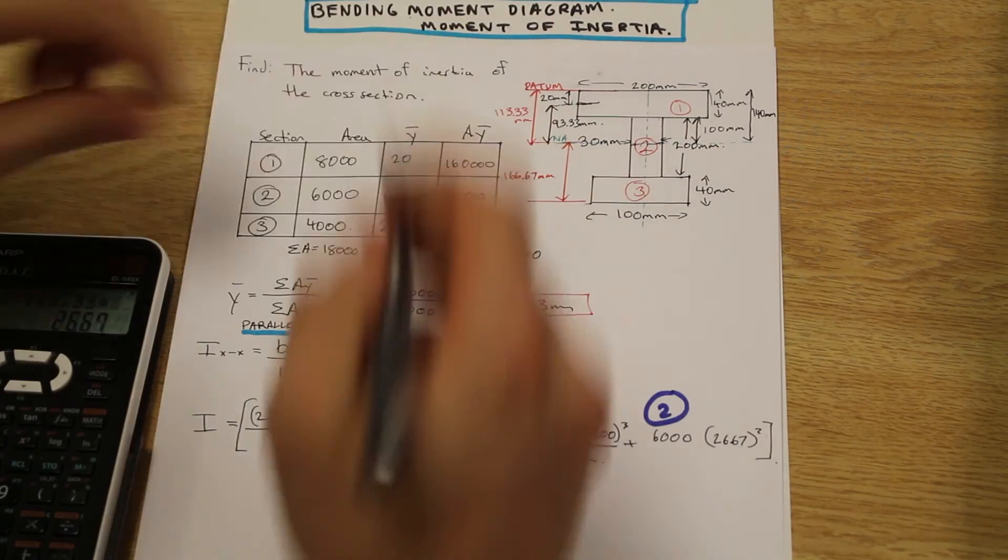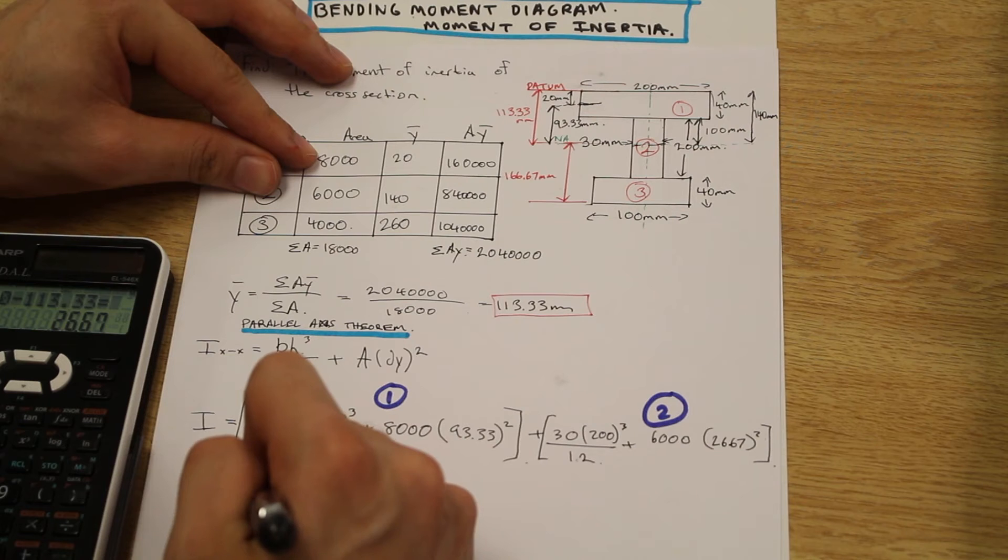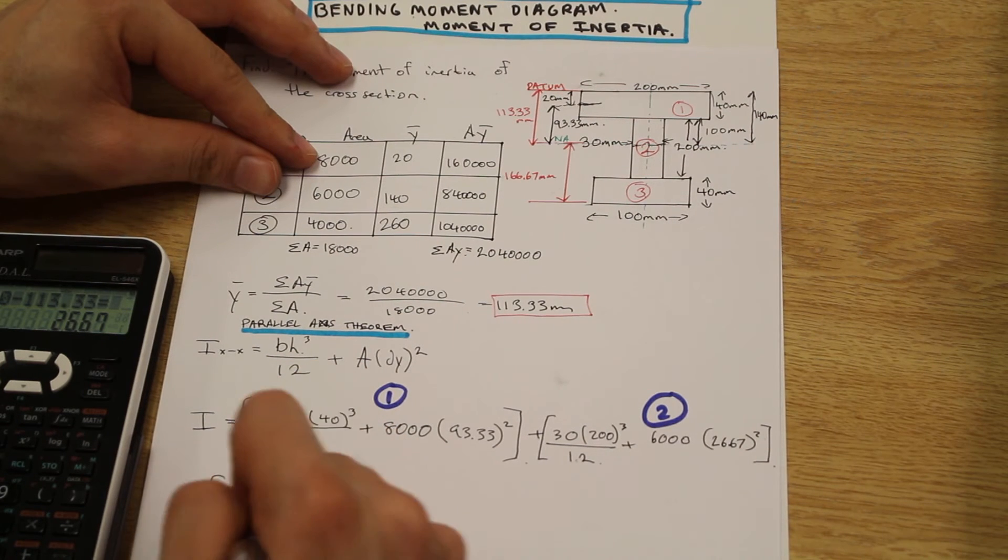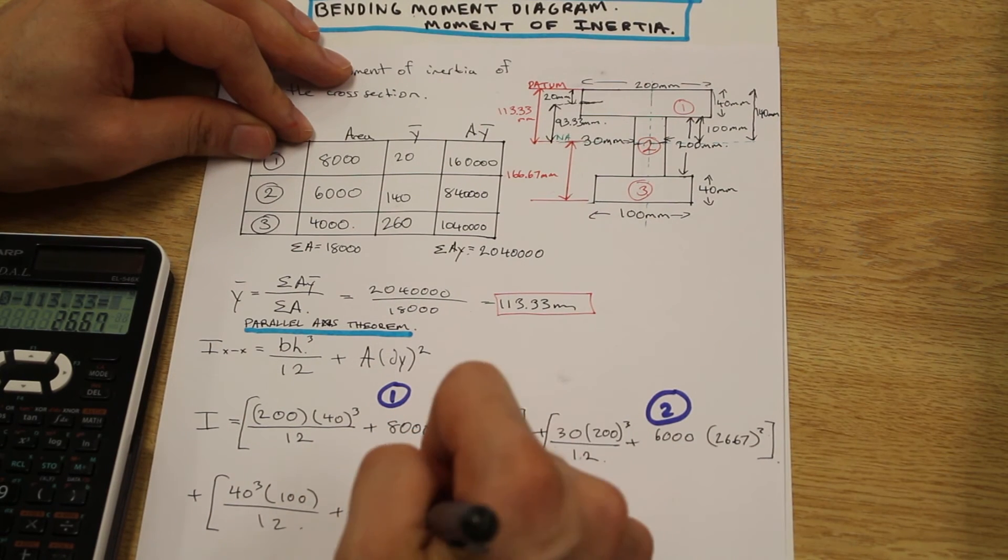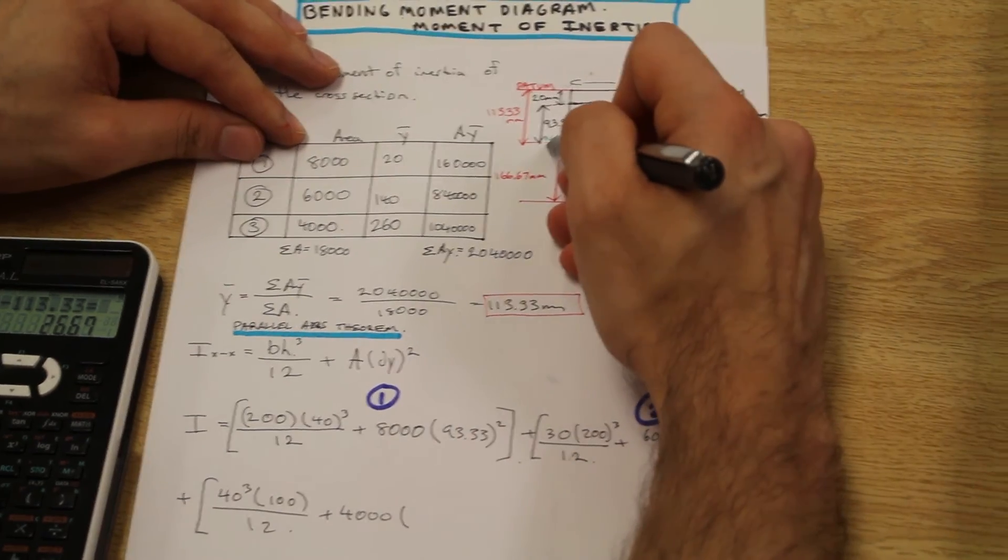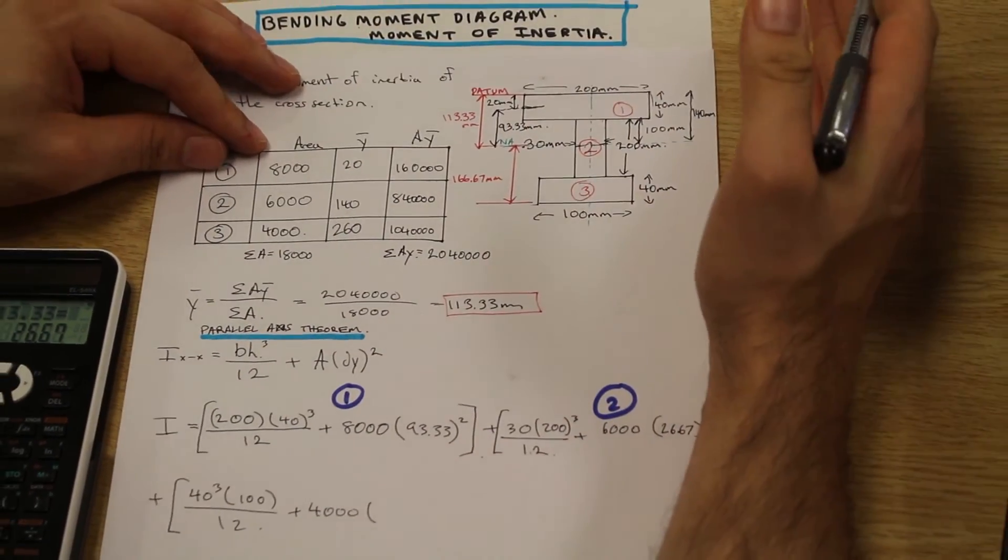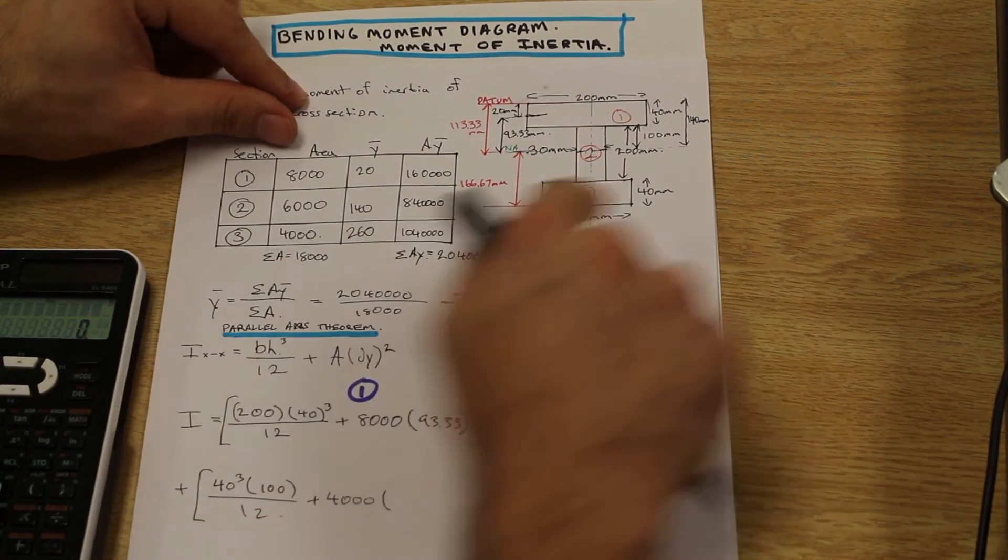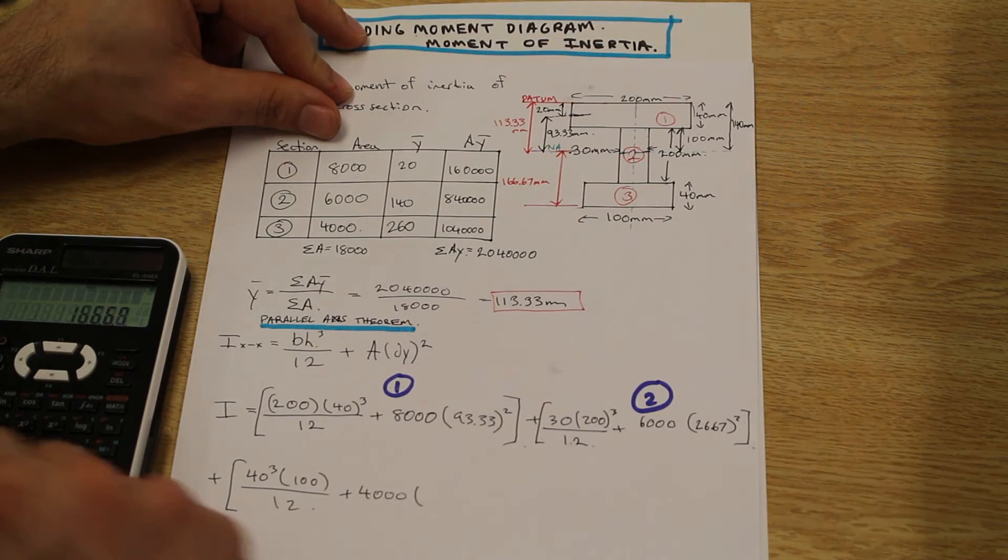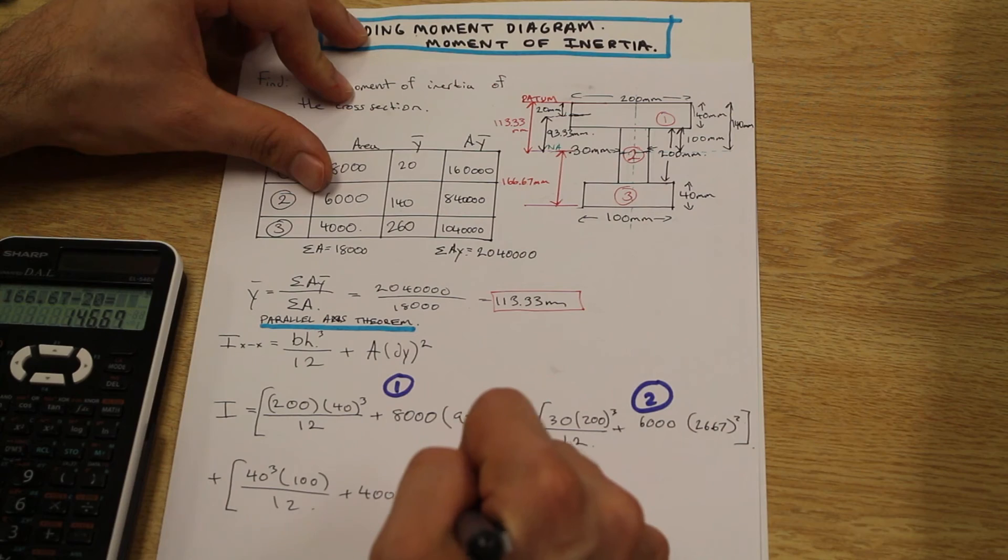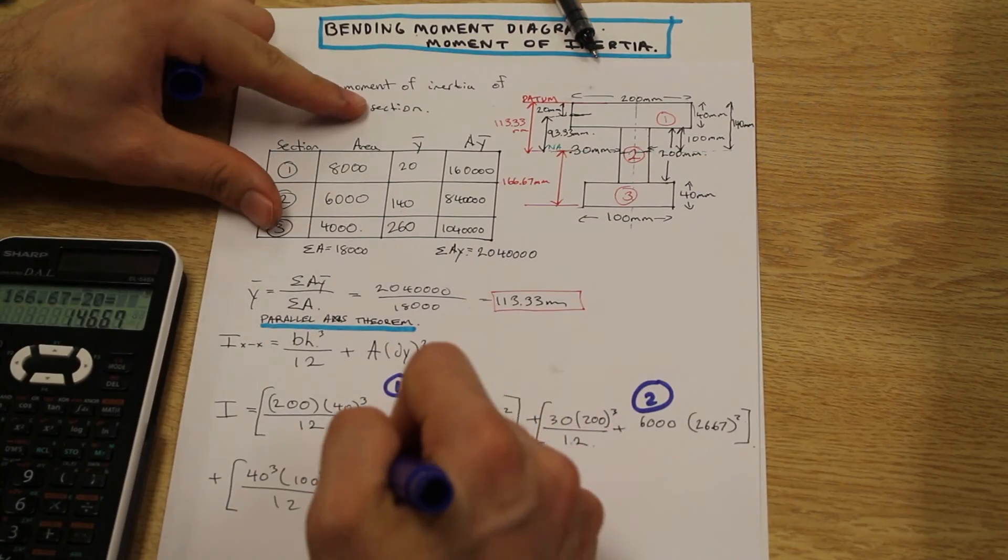Now let's just finish up the third one quickly. We have 40 as the height, we're going to cube that, times 100 which is the base, divided by 12. We have the area which is 4,000 millimeters squared. And what's our dy here? Well we have 166.67 millimeters from the bottom of the beam to the NA, and we just need to subtract 20 to get to the centroid of section three. That distance to the neutral axis is 146.67 millimeters. That's squared, and that's section three.